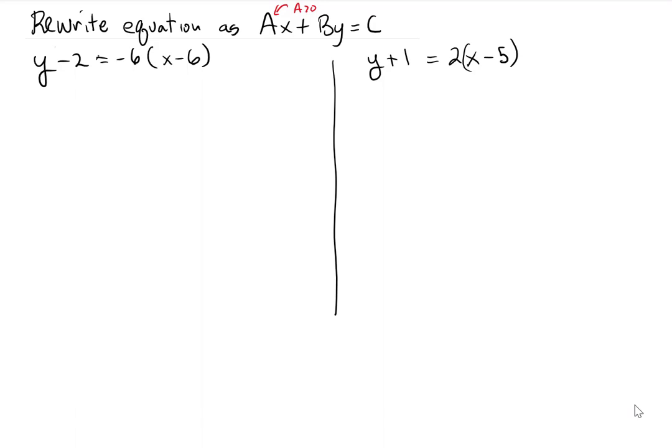So in the first problem we have y minus 2 equals negative 6 times x minus 6. Simplification, let's make that y minus 2 equals, let's distribute so that we get negative 6x plus 36. And it's gonna be our first stage here, is the distributive stage.